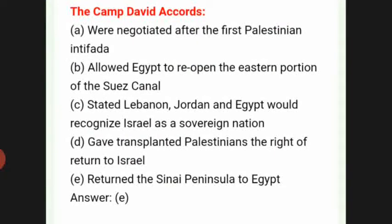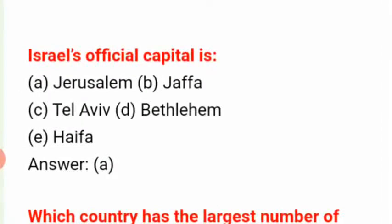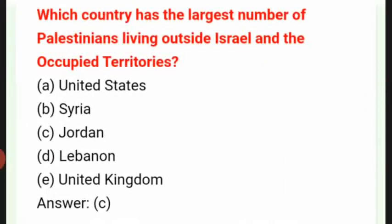The Camp David Accords: the answer is E, it returned the Sinai Peninsula to Egypt. Israel's official capital is answer A: Jerusalem.